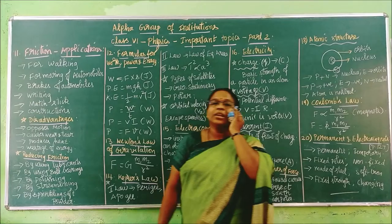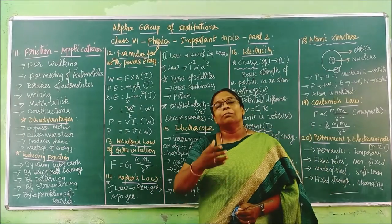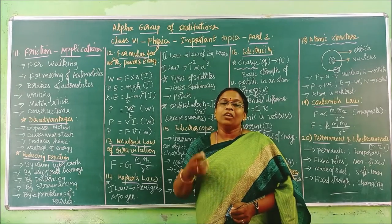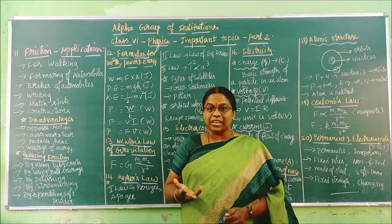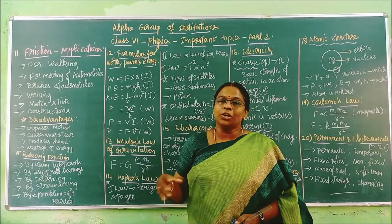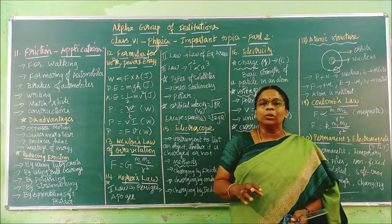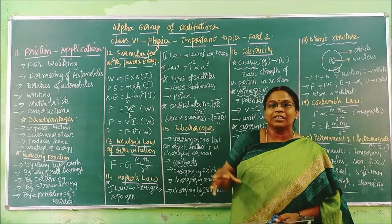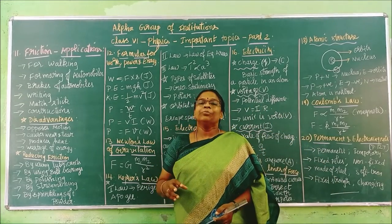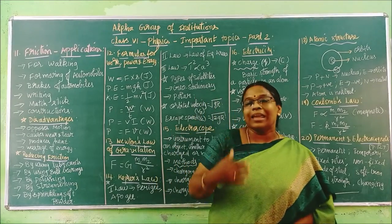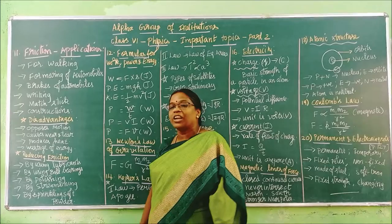By sprinkling soft powder: I hope you have played carom board. When playing, to avoid roughness the coin won't move easily, so you sprinkle carom powder. It reduces the irregularities on the carom board, makes it smoother, and the coin can move very easily. These are the factors that reduce friction.